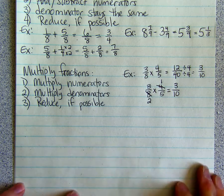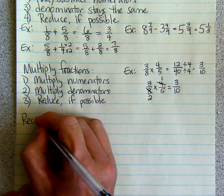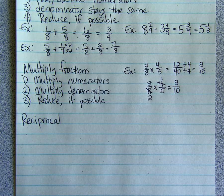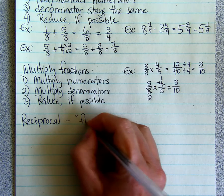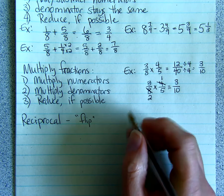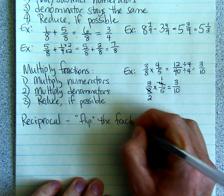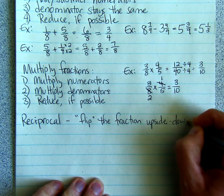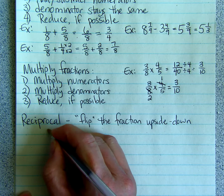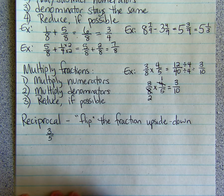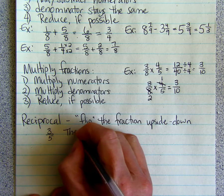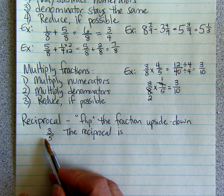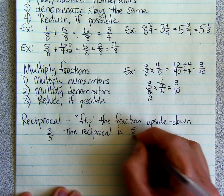Now we're going to talk about reciprocals. A reciprocal is just where you take a fraction and you flip it upside down. Here's an example. If we have the fraction 3 fifths, then the reciprocal is 5 thirds.